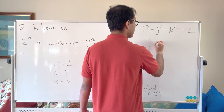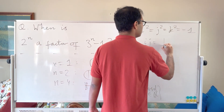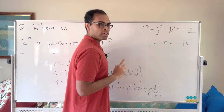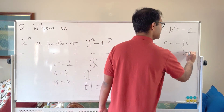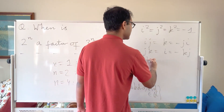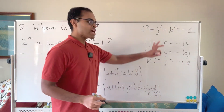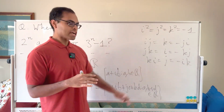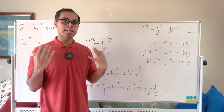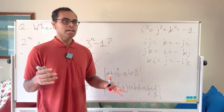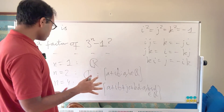The quaternions are not commutative — the order of multiplication matters. The rules are: ij = k = −ji, jk = i = −kj, and ki = j = −ik. Using these laws you can multiply any pair of quaternions. Every quaternion has a multiplicative inverse so you can divide, but multiplication is not commutative.